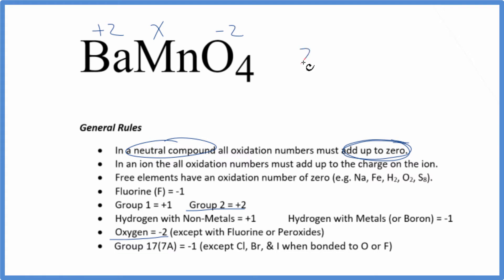We could say 2 plus the manganese, we don't know, so that's X. 4 times minus 2 is minus 8. All of that is going to equal 0.